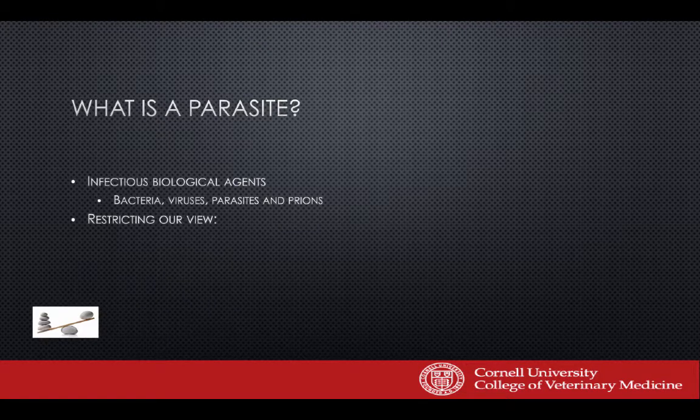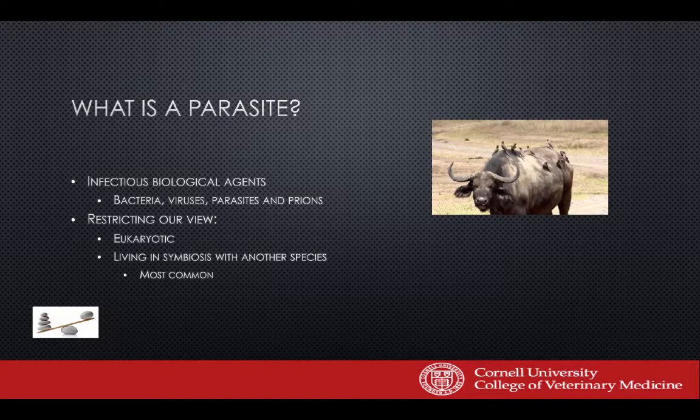We start by defining what a parasite is. Some people think of parasites as any infectious agent — bacteria, viruses, prions, and eukaryotes — but we're restricting our view to exclude viruses, bacteria, and prions, and really looking at animals that are parasitic. Parasitic relationships are just a form of symbiosis — one animal living in association with another — and that is actually the most common mode of existence in the world.